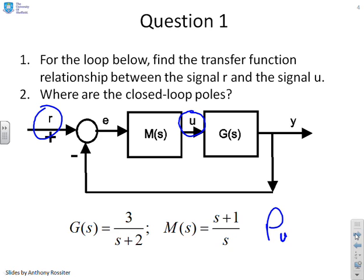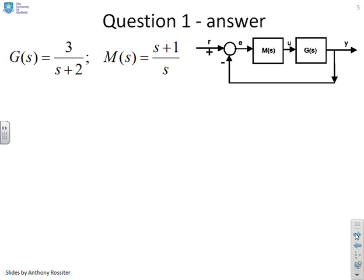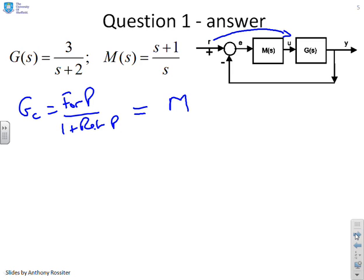Now is the time to pause because I'm going to go through the solution. If we use our formula that GC equals forward path over 1 plus return path, then the forward path between R and U is just M, whereas the return path is GM. So U equals M over 1 plus GM into R.